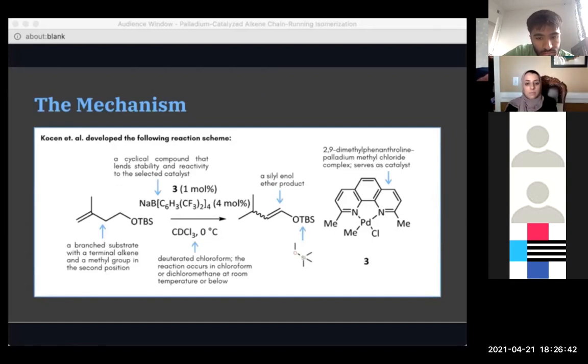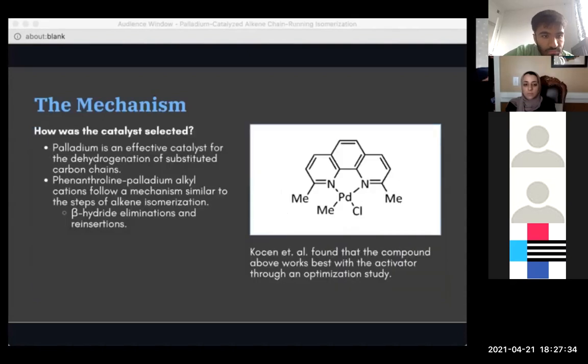We go from a terminal alkene to an internal alkene and a siloenol ether, but what actually allows this? What are some of the conditions and catalysts? First, from underneath the reaction arrow, we can see that the reaction takes place in deuterated chloroform, and it also works in chloroform or dichloromethane at room temperature or below. On top of the reaction arrow, we see the catalyst, which is the 2,9-dimethyl-phenanthroline palladium methyl chloride complex, and that's definitely a mouthful. I'll talk a little bit about how that catalyst was selected and why it works. The catalyst is activated by NaBARF4, which is shown here on the right. The activator is a cyclical compound that lends stability or activity to the catalyst. The activator-catalyst pair is what really allows this reaction to proceed. The scheme is definitely a lot, and there's a lot of different things that play into it and provide context.